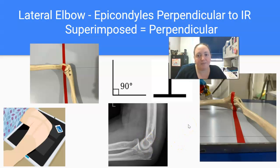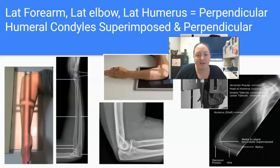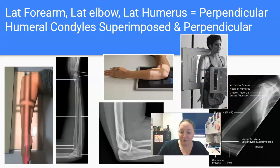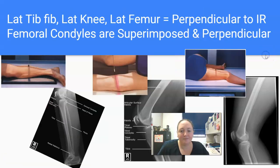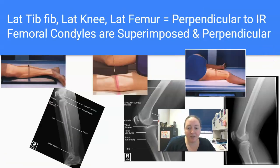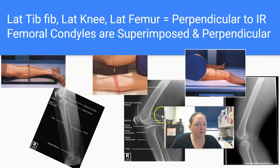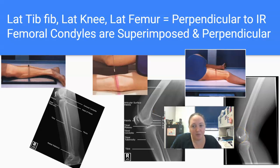When you see the word 'superimposed,' think perpendicular. Lateral forearm, lateral elbow, lateral humerus — the epicondyles are superimposed, so they're perpendicular. For lower extremity: lateral tibia/fibula, lateral knee, lateral femur — the femoral condyles, when superimposed, are now perpendicular.